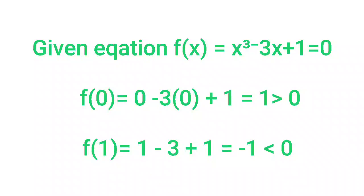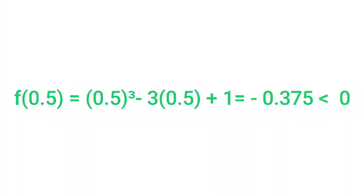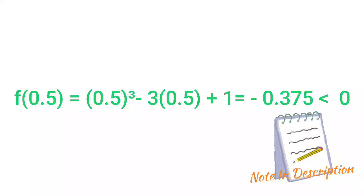First we input x = 0: f(0) = 0³ - 3(0) + 1 = 1 > 0. Then x = 1: f(1) = 1³ - 3(1) + 1 = -1 < 0. Since f(0) > 0 and f(1) < 0, this implies the root lies on [0, 1]. Now we input x = 0.5: f(0.5) = 0.5³ - 3(0.5) + 1 = -0.375 < 0. Since f(0.5) < 0, this implies the root lies on [0, 0.5].